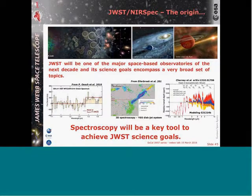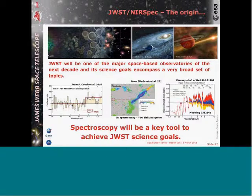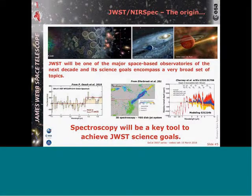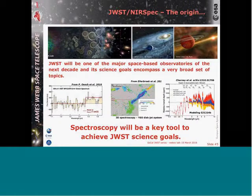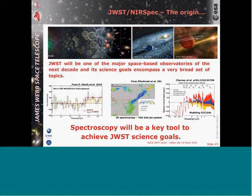Looking back at the origin of NIRSpec, we have to look at the science goals of JWST. They are fairly broad — covering what was called at the time 'origins': the re-ionization epoch, the assembly of galaxies, the formation of planetary systems, and the formation of stars.